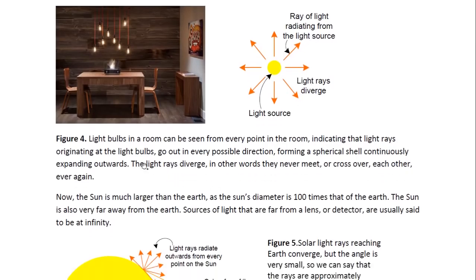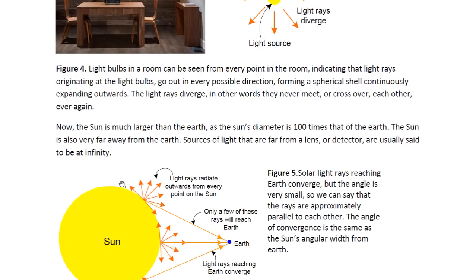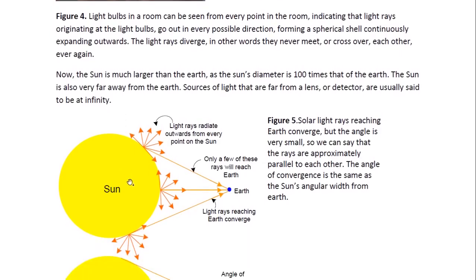The light rays originating at the light bulbs go out in every possible direction, forming a spherical shell continuously expanding outwards from the light source. These light rays diverge — in other words, they never meet or cross over each other ever again. Now, the sun is much larger than the earth, as the sun's diameter is 100 times that of the earth, and the sun is very far away from the earth. Sources of light that are far from a lens or detector are usually said to be at infinity.